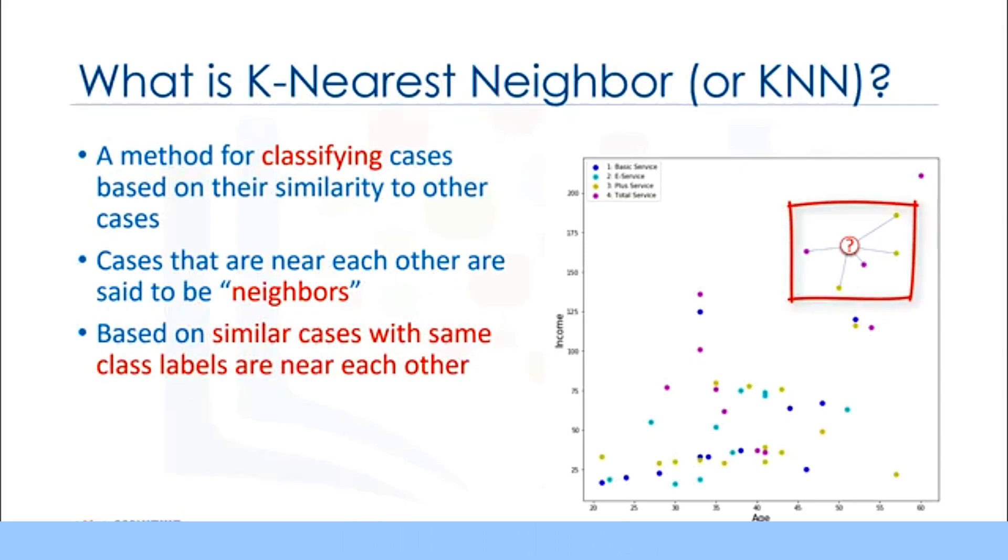k nearest neighbors is based on this paradigm. Similar cases with the same class labels are near each other. Thus, the distance between two cases is a measure of their dissimilarity. There are different ways to calculate the similarity, or conversely, the distance or dissimilarity of two data points. For example, this can be done using Euclidean distance. Now, let's see how the k nearest neighbor's algorithm actually works.